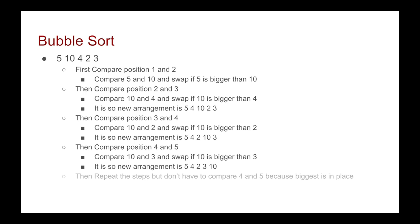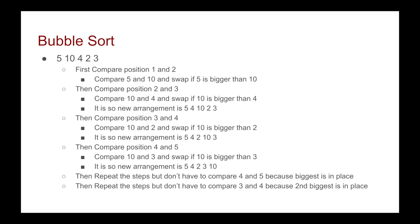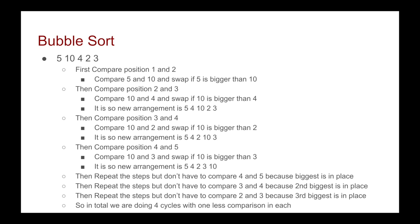Now we repeat the steps, but we don't have to do the final comparison of positions 4 and 5, because the first cycle will have kicked the biggest number to the final place. After the second repeat, we repeat for a third time but don't have to compare positions 3 and 4, because now the second biggest is in place. Then we repeat again but don't compare positions 2 and 3. Essentially we're doing four cycles with one less comparison each, sorting by kicking the biggest number to the end.